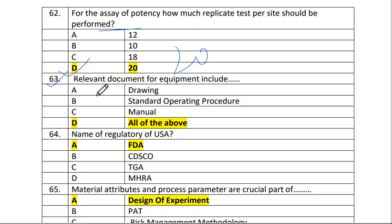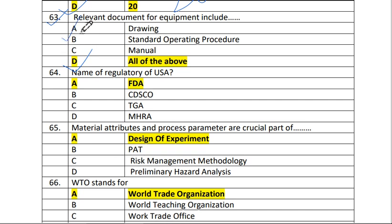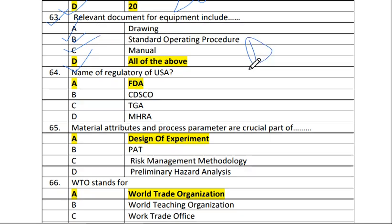Next is question number 63. Relevant documents for equipment include? All of the above — A is drawing, B is standard operating procedure, and C is manual. The answer is D, all of the above.